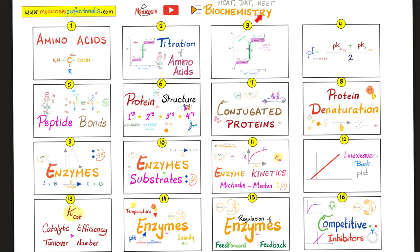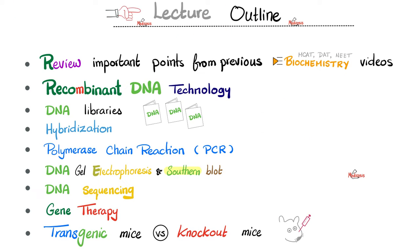Please watch the videos in this biochemistry playlist in order. In this video, we will review important points from previous biochemistry videos. We'll talk about recombinant DNA technology, DNA libraries, hybridization, PCR, DNA gel electrophoresis, and the difference between southern blot, northern blot, and western blot. We will talk about DNA sequencing, gene therapy, and transgenic versus knockout mice.